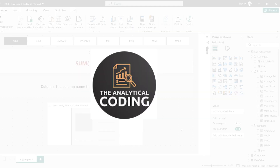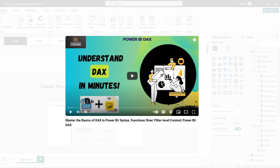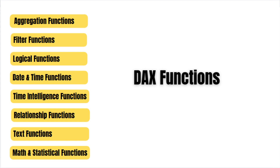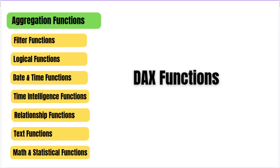Welcome back to Analytical Coding. We have covered basics of DAX, filter context, and row context in previous videos — I will attach the link in the description. In this video we are going to learn mostly used DAX functions category-wise. This is a series of DAX videos exploring functions category-wise to help you master Power BI step by step. In today's video we will start with aggregate functions in DAX, which are essential for summarizing and analyzing data in Power BI.